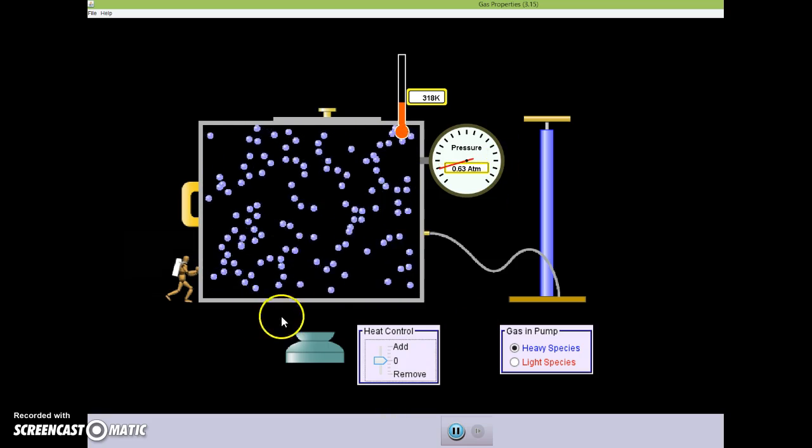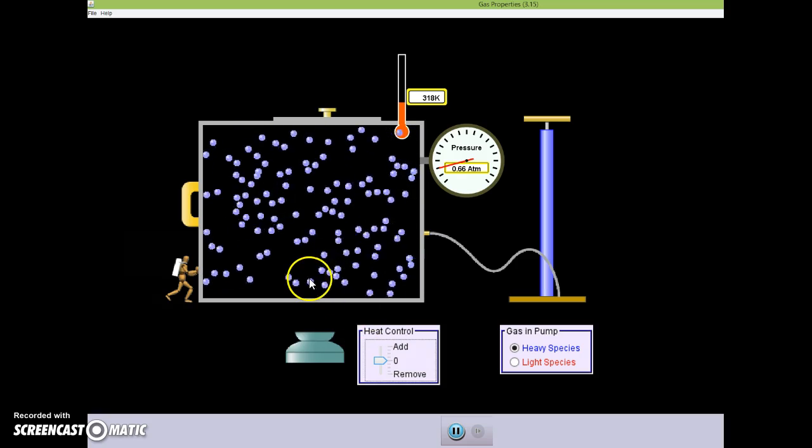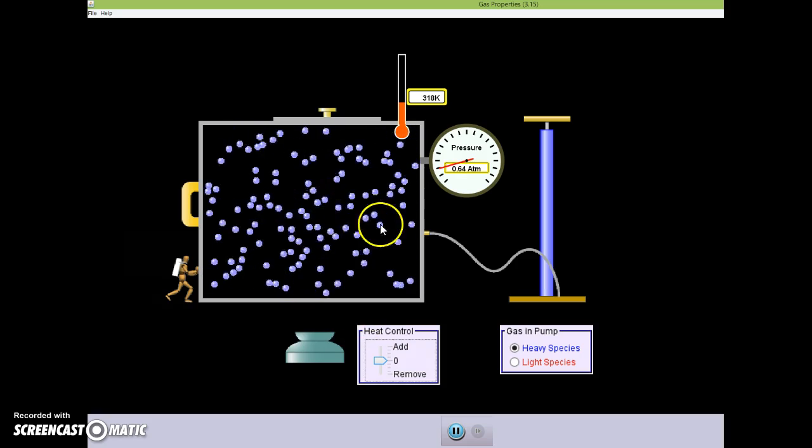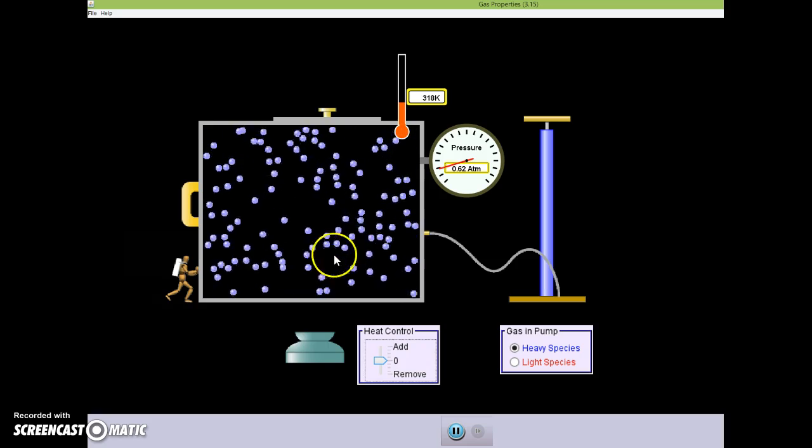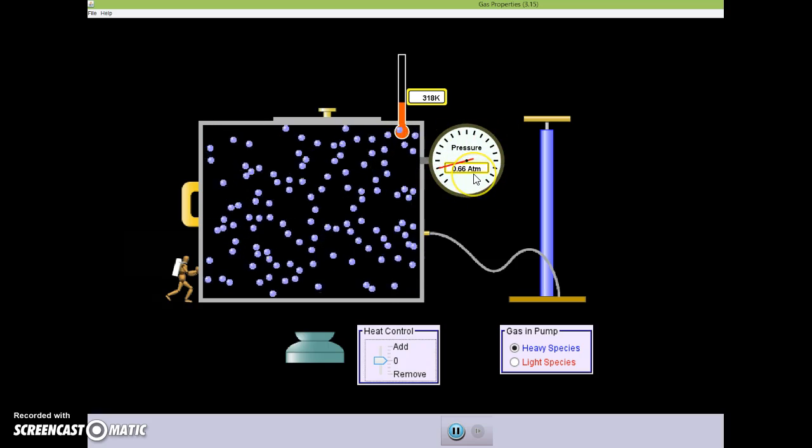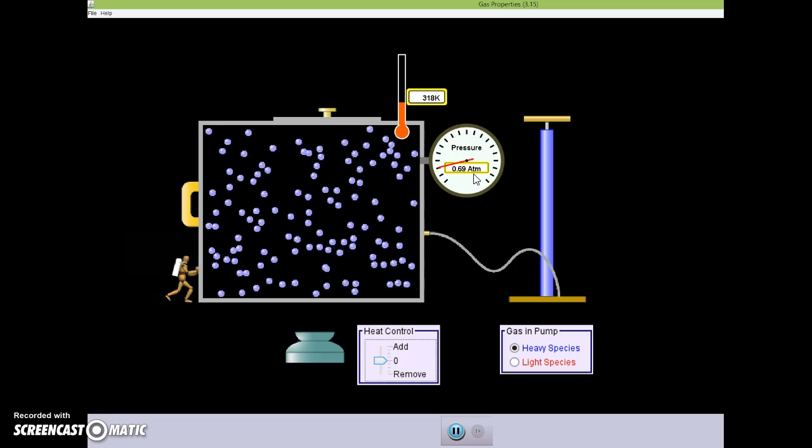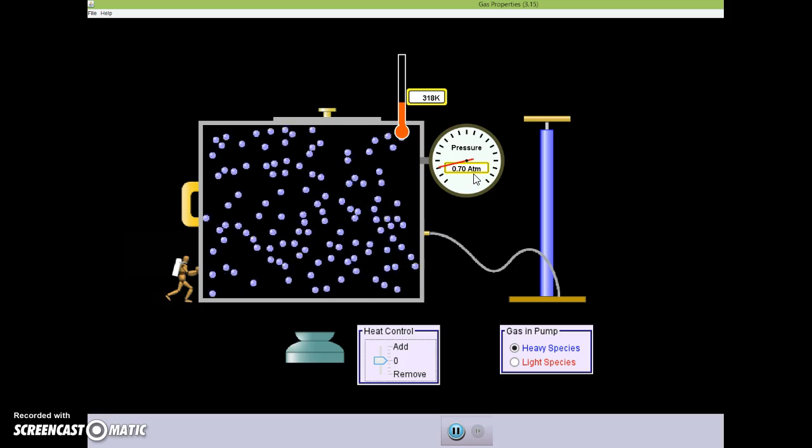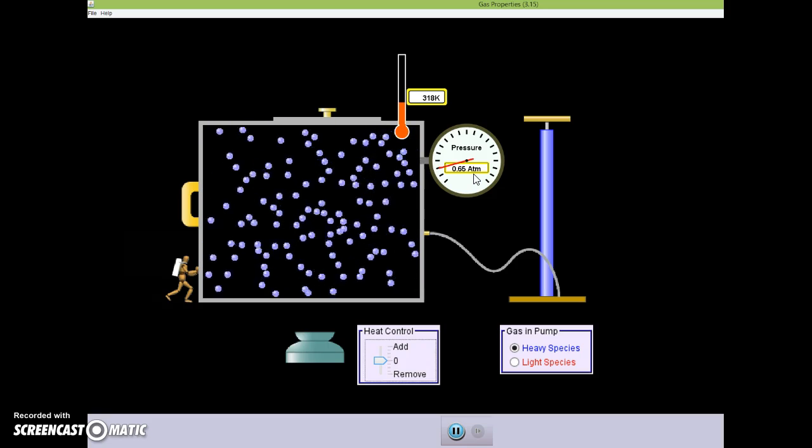The final point of the kinetic particle theory has to do again with gas pressure, which is caused by the particles hitting each other and the sides of the container. And we can see that pressure registered on the gauge here at point six, or it's jumping around a little bit, but about point seven atmospheres or ATM.